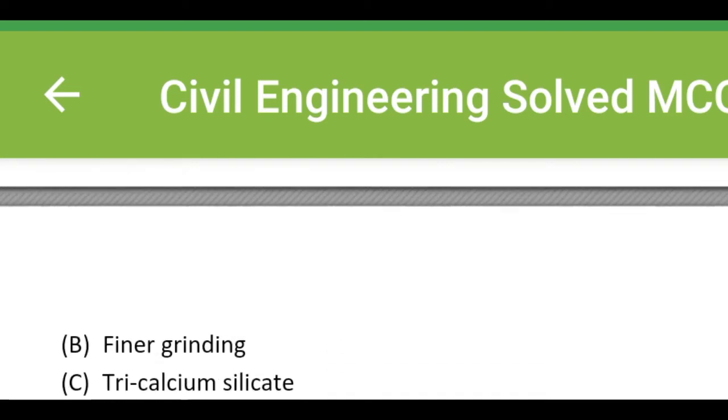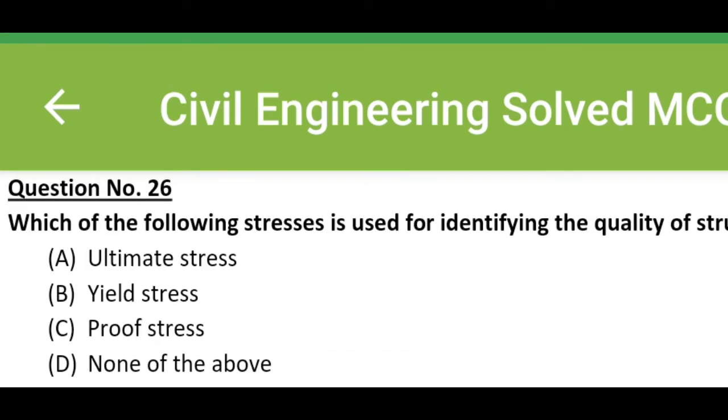Option C, tricalcium silicate. Option D, tricalcium aluminate. The correct answer is option B, finer grinding. Which of the following stresses is used for identifying the quality of structural steel? Option A, ultimate stress. Option B, yield stress.